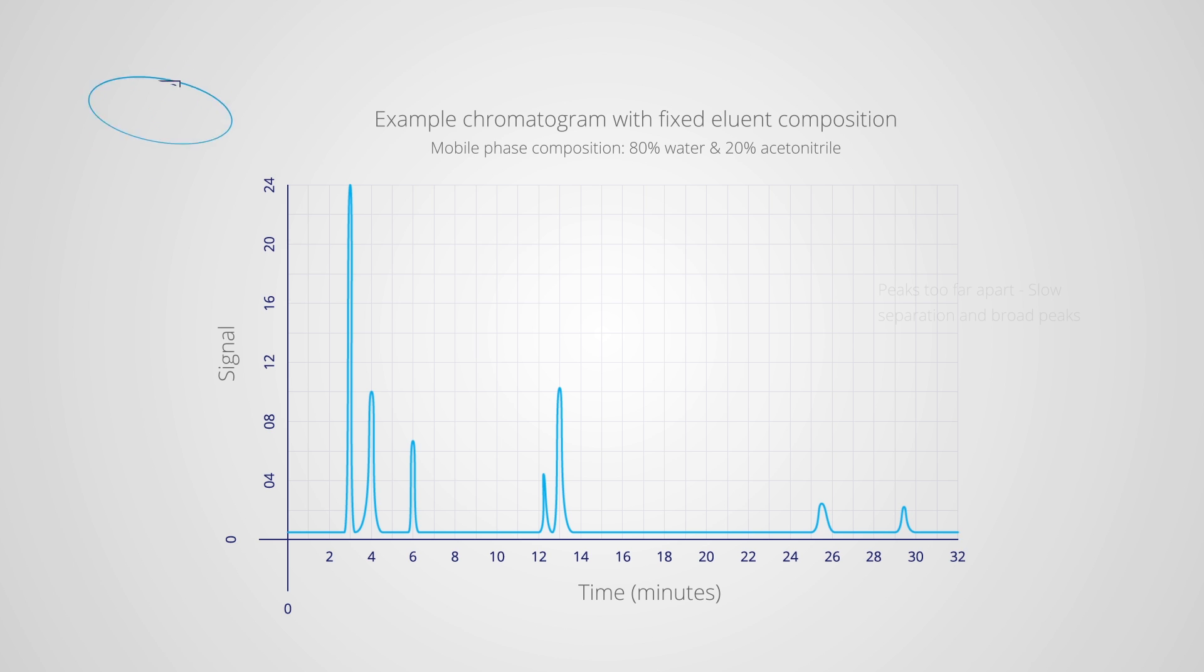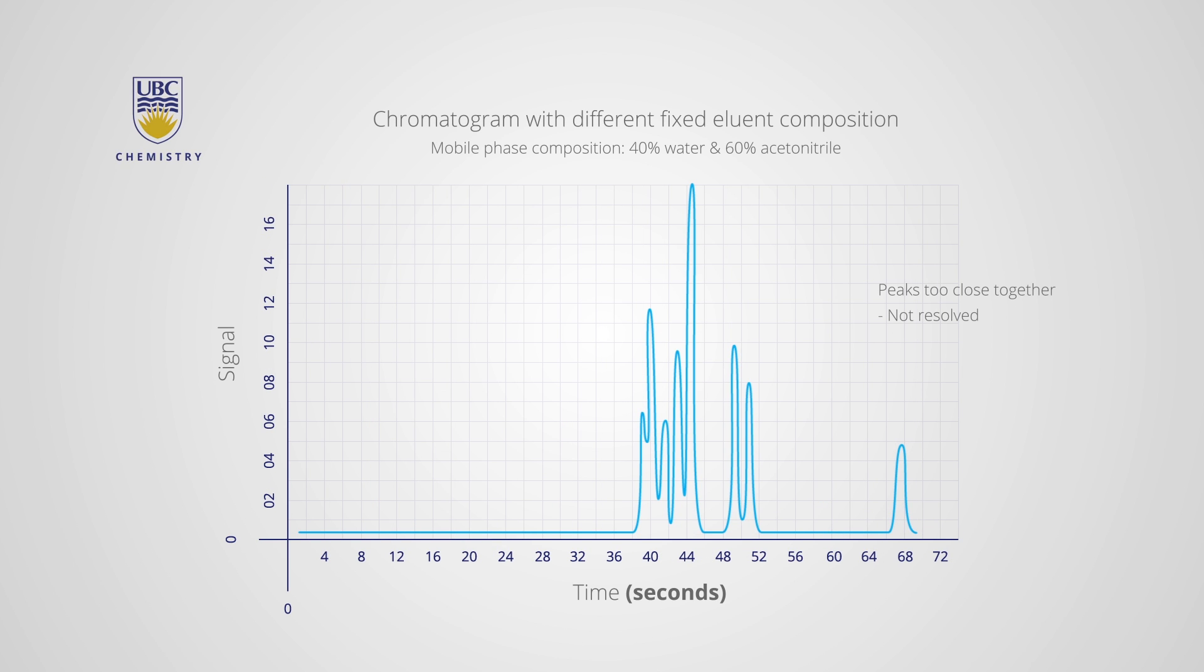During the separation process, the composition of the mobile phase can be changed to achieve a better separation of peaks on the chromatogram. This process, which is called gradient elution, addresses the so-called general elution problem.